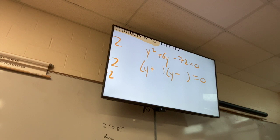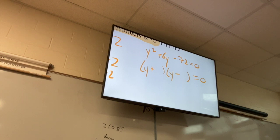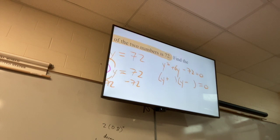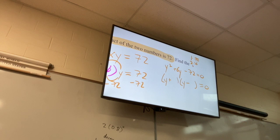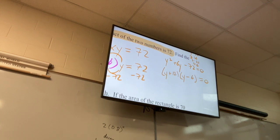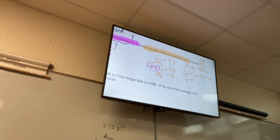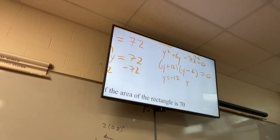That becomes Y² + 6Y − 72 = 0 after distributing and subtracting 72. Factor: two factors of 72 whose difference is 6. The factors are 12 and 6. So Y equals negative 12 or Y equals 6.